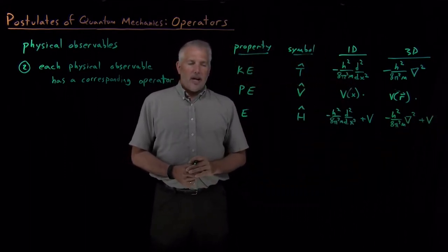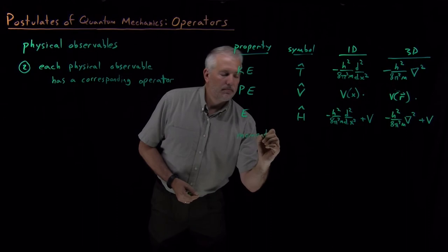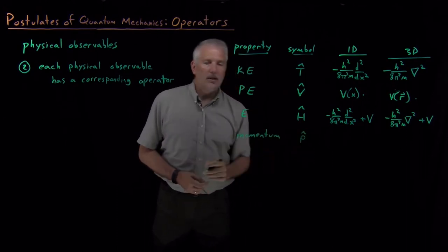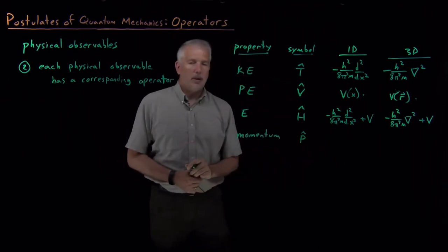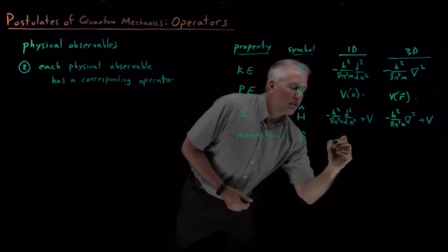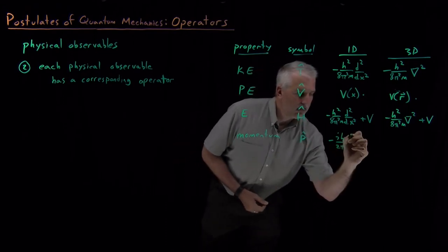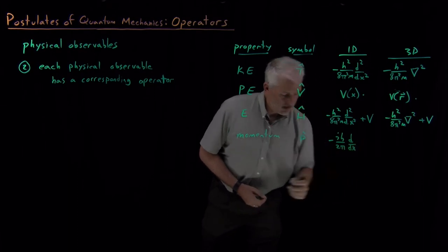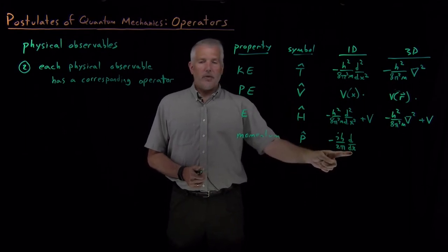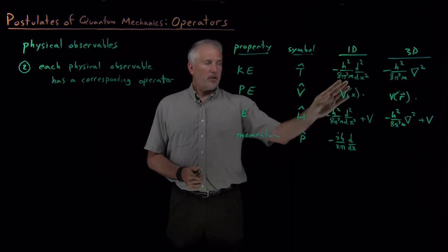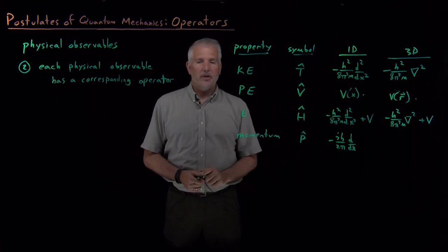To get to a few properties that we haven't already seen, there's a momentum operator. If I want to find out the momentum of a particle, the operator that I need to use is this momentum operator, p hat. And that looks a little bit like the kinetic energy operator in a way, but it's a single derivative instead of a second derivative. It's got h and the two pi to the first power instead of higher powers. And it's complex. Notice the i here, the square root of negative one that shows up in the momentum operator.